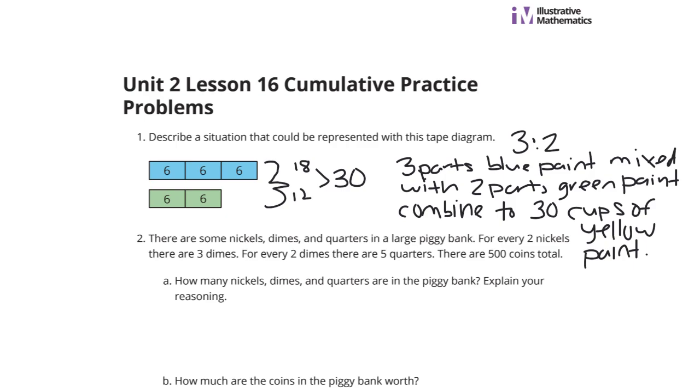With this many different pieces, I think a table could be very helpful here. So if we start off with our columns of nickels, dimes, quarters, and then total, let's take a look at what we're dealing with here. We're told for every 2 nickels, there are 3 dimes, and that for every 2 dimes, there are 5 quarters. Well, I'm looking at that 3 dimes and 2 dimes going, what do I do?